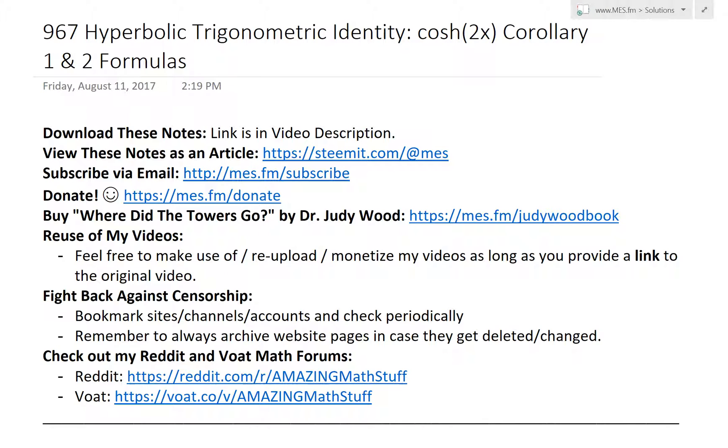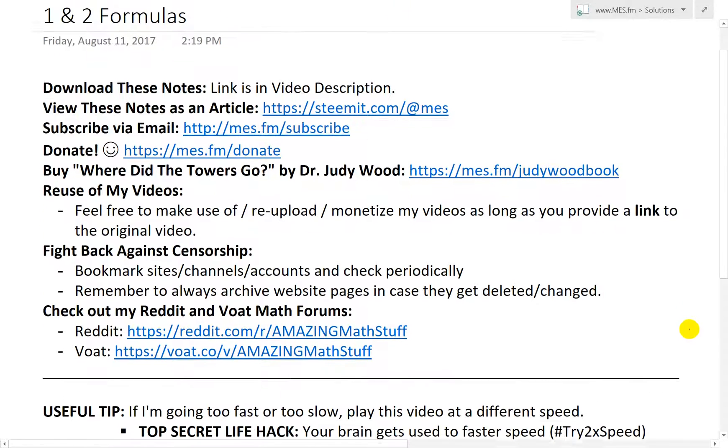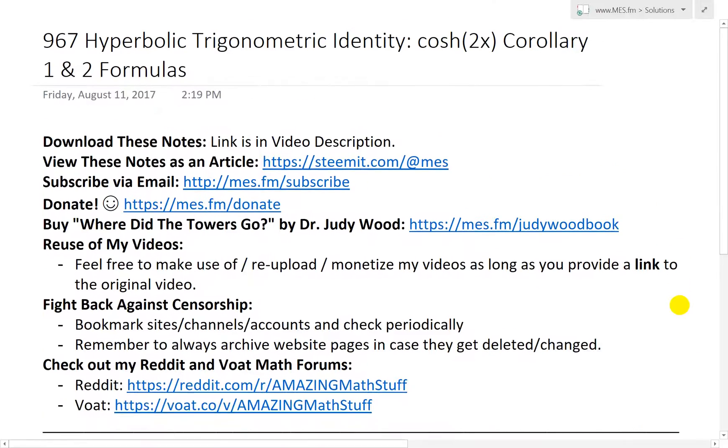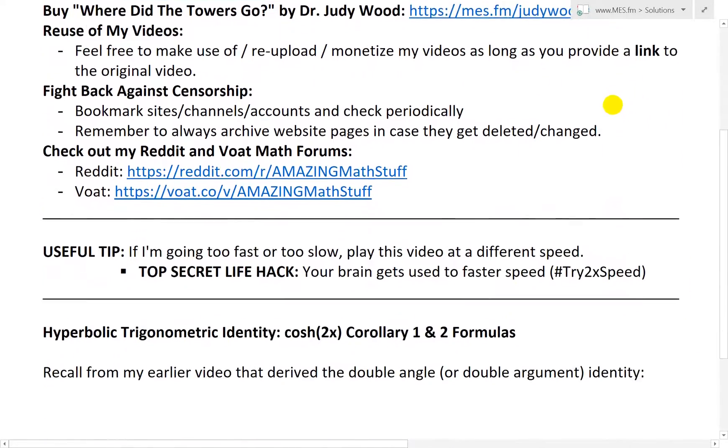Hi, it's Tom from The Math Easy Solution. Turns to hyperbolic trigonometric identities. Now look at the cosh(2x), or the double angle for hyperbolic cosine trig identity. But now look at the corollary formulas 1 and 2. Corollary just means follows from previously defined proof, like in my earlier videos.